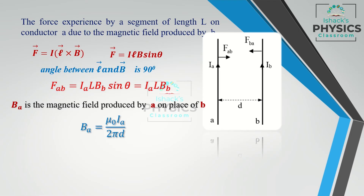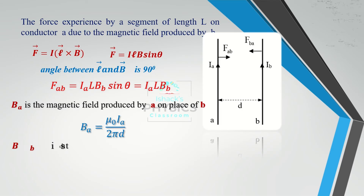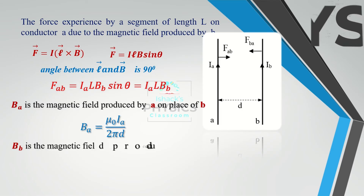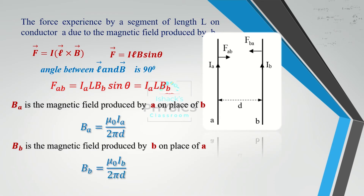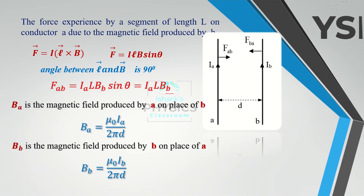So BA, the magnetic field produced by conductor A at the location of conductor B, is equal to μ0Ia / 2πd. Similarly, BB, the magnetic field produced by conductor B at the location of conductor A, is equal to μ0Ib / 2πd.